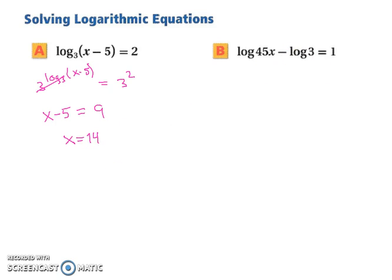Let's try this next one. So we have log 45x minus log 3 equals 1. So when you subtract, it's the same as dividing. So we have log of 45x divided by 3, equaling 1.